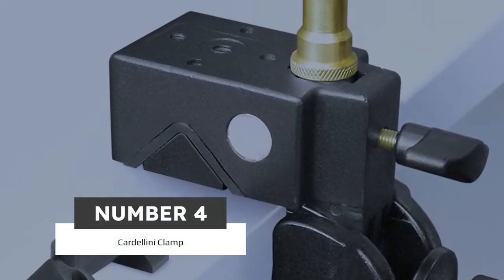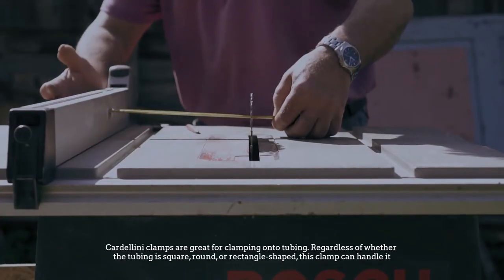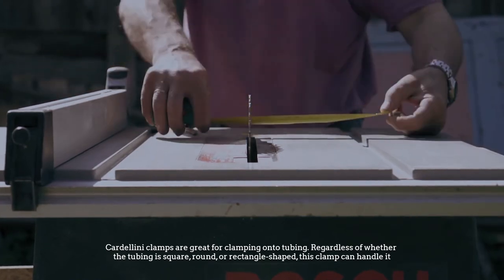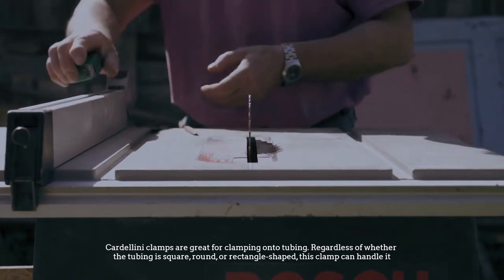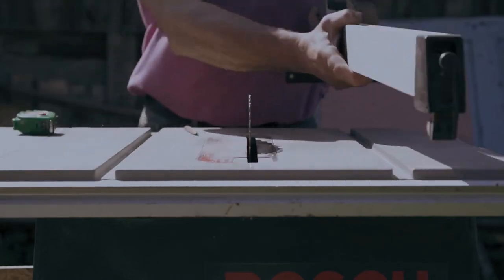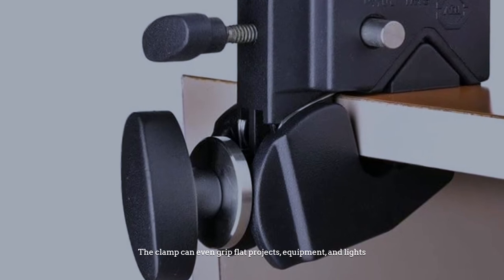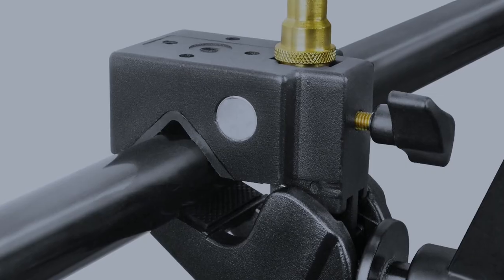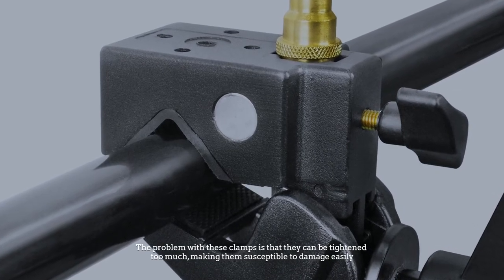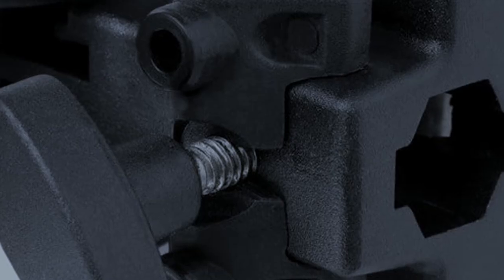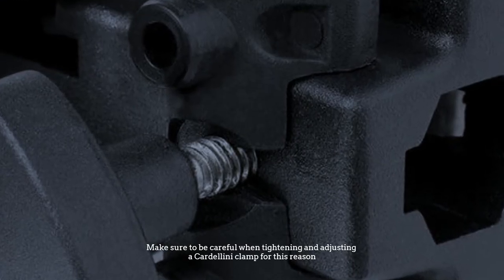Number four: Cardilini clamp. Cardilini clamps are great for clamping onto tubing, regardless of whether the tubing is square, round, or rectangle shaped. This clamp can handle it. The clamp can even grip flat projects, equipment, and lights. The problem with these clamps is that they can be tightened too much, making them susceptible to damage easily. Make sure to be careful when tightening and adjusting a cardilini clamp for this reason.